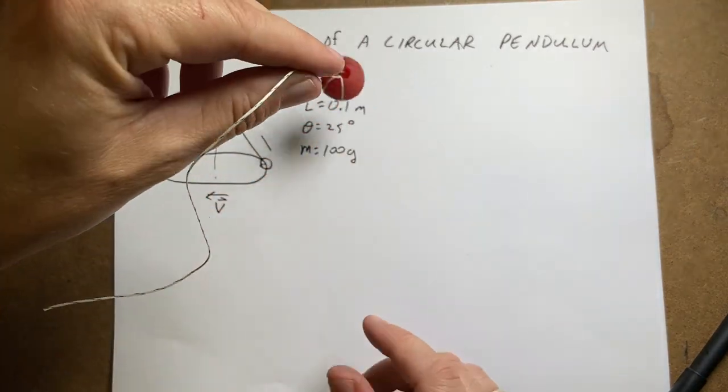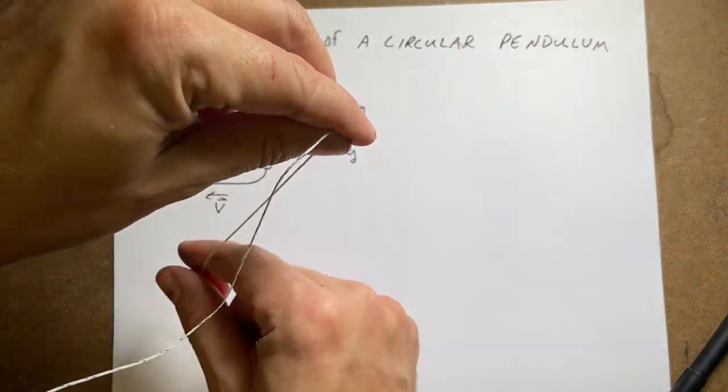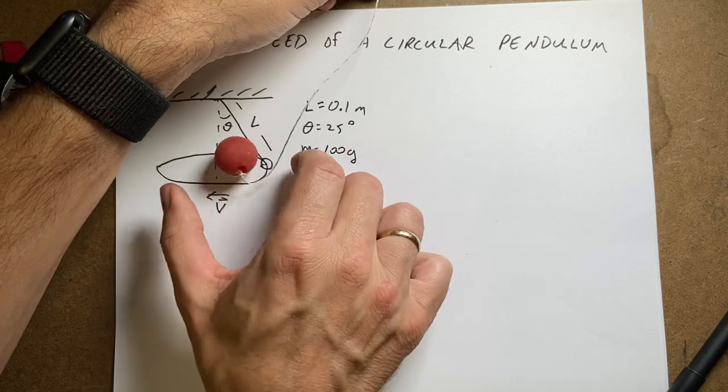A pendulum would be if the thing just swings back and forth like this. So if you look at it from the side it would be like this.